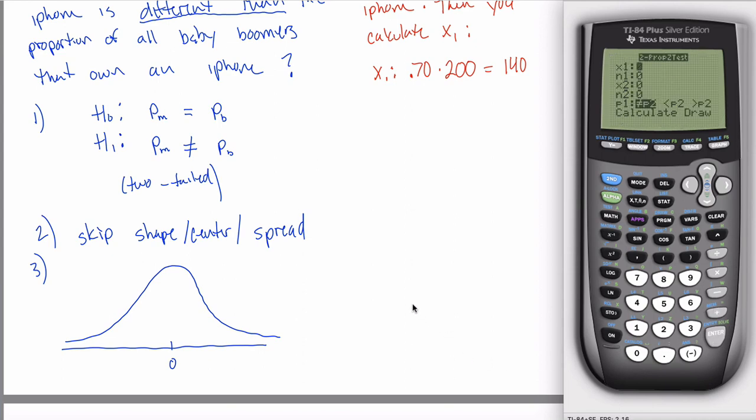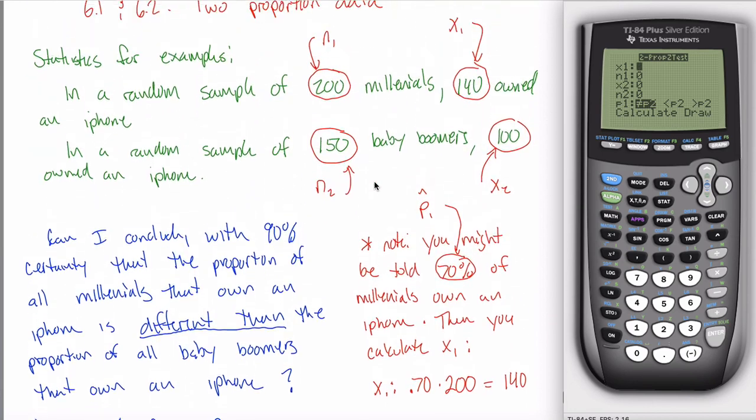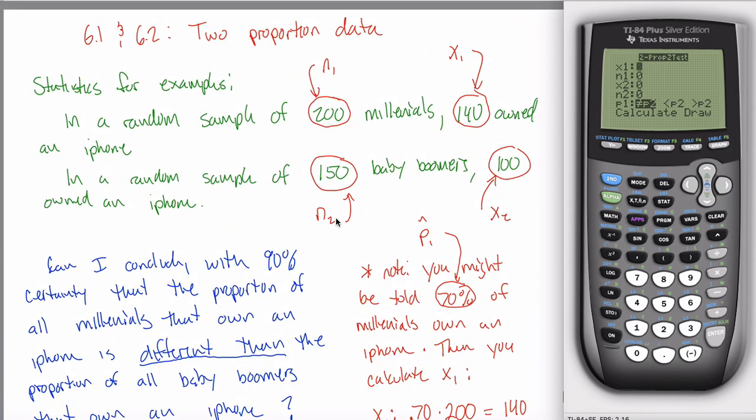If you hit enter here, you'll see that it doesn't ask you for a whole lot of stuff, because there isn't that much information given to you in these problems. N1, X1, N2, and X2. So X1, if I call my 1s the Millennials, then that would be 140, and N1 would be 200, and if the 2s are the baby boomers, then X2 would be 100, and N2 would be 150.